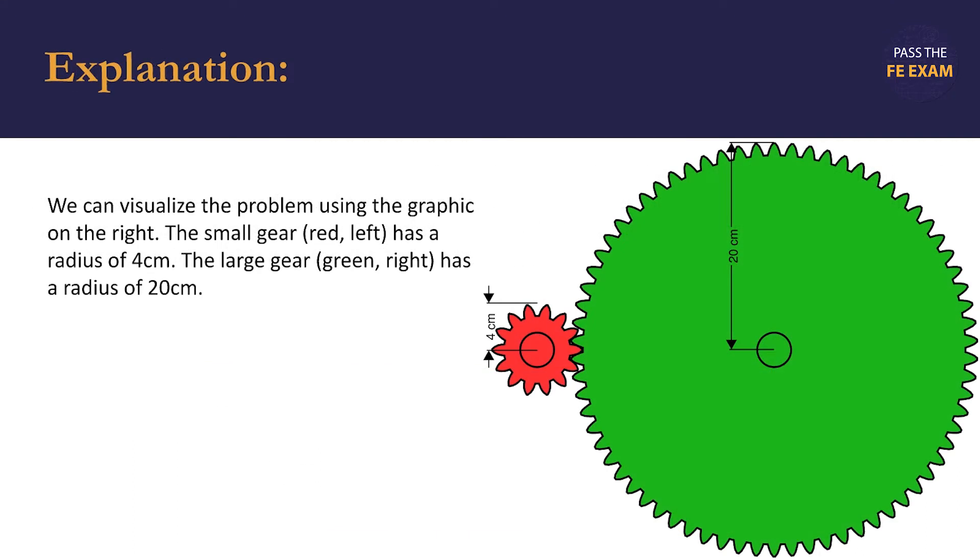We can model the problem by envisioning two gears of different sizes with meshing teeth. As shown, the smaller gear is on the left and it's in red, and the radius is 4 cm. The larger gear is on the right, it's green, and it has a radius of 20 cm.